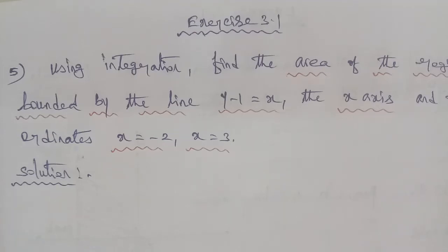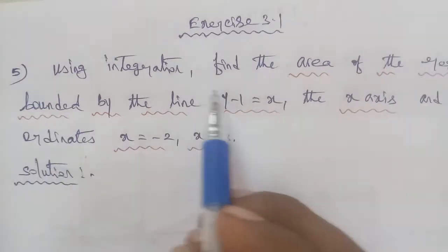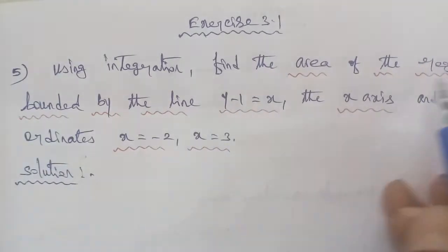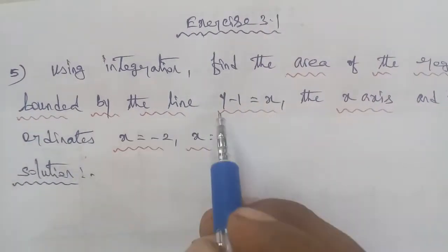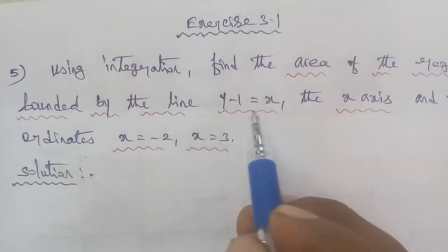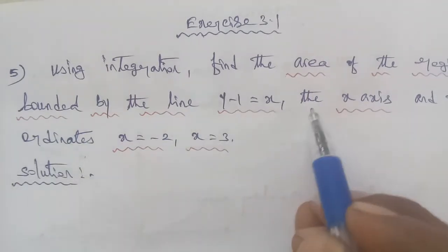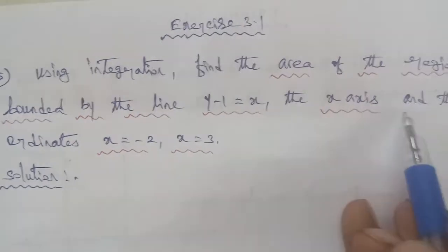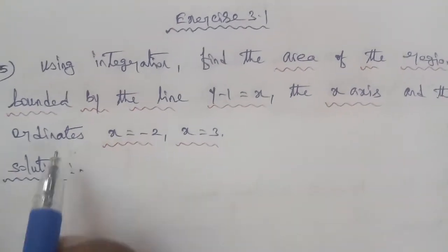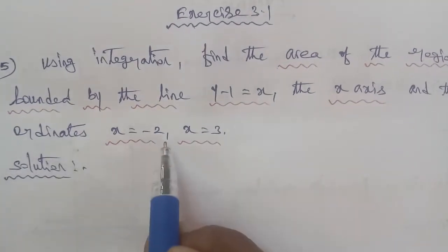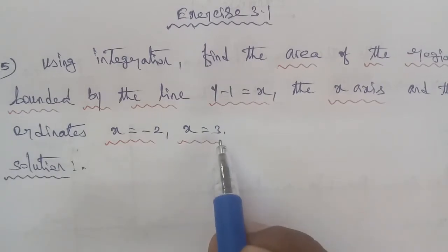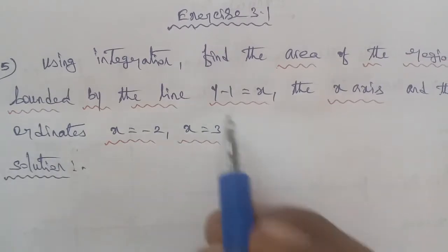Hi students, I am Gopinath. 12th Business Maths, Exercise 3.1, Q5. Using integration, find the area of the region bounded by the line y minus 1 equal to x, the x-axis, and the conditions x is equal to minus 2 and x is equal to 3.